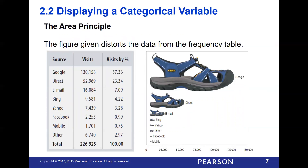If we look at this example, we're looking at how many hits to the Keen website were generated by each of these particular sources. Google was responsible for 130,000 visits, and direct access was responsible for 52,000 visits. Now they laid this all out based on the width of the graph, using a cool-looking shoe graphic. However, the problem is that they were doing this based on the length of the shoe, not how much overall space the shoe took up in the picture.